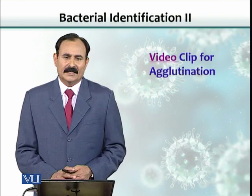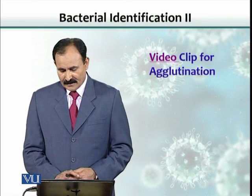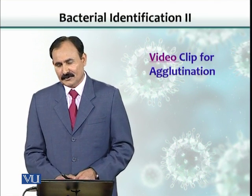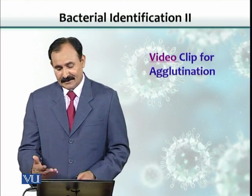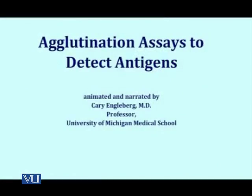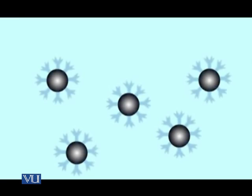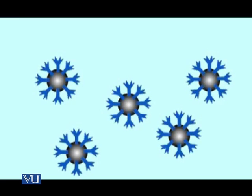Here is a video clip that will make things more clear. All these videos have been taken from YouTube, so we must thank YouTube for providing us these educational clips. Agglutination assays have been used for decades as a simple method to detect antigenic substances in biological samples. The agglutination assay uses tiny particles, most often latex beads, coated with a specific antibody against the antigen you would like to detect.